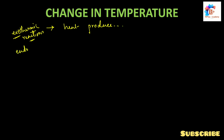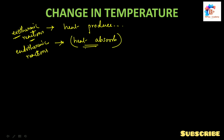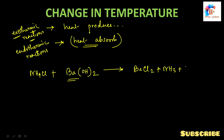In endothermic reactions, heat is absorbed. If we mix ammonium chloride with barium hydroxide, then barium chloride, ammonia and water will be produced. In this reaction, heat is absorbed. So this is an example of an endothermic reaction. We have now seen how temperature changes in chemical reactions — exothermic reactions produce heat, while endothermic reactions absorb heat.